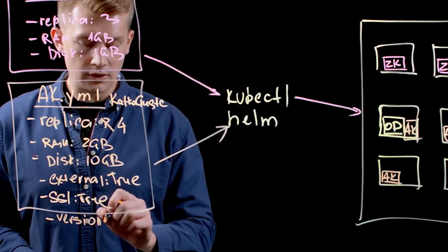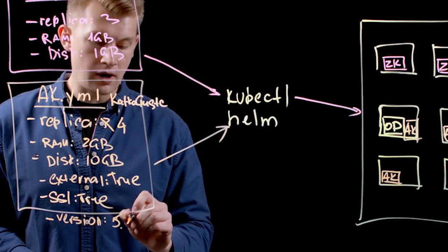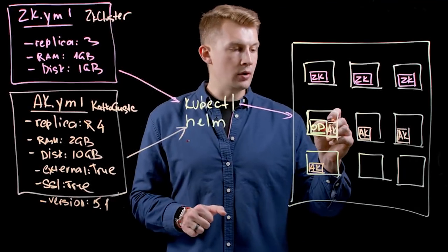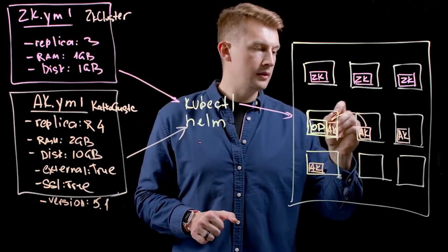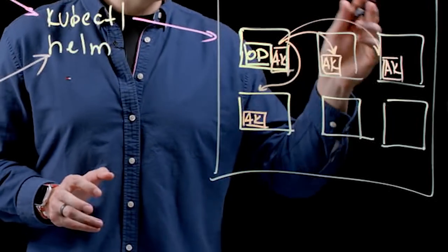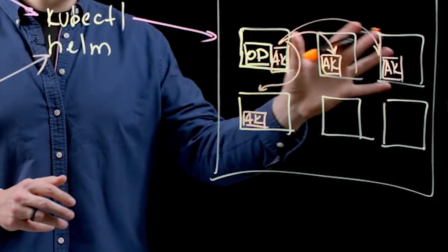If we want to change the version, we want to upgrade to Confluent platform 5.4. We send this command and operator will go one by one and it will run upgrade operation on each and every broker here.